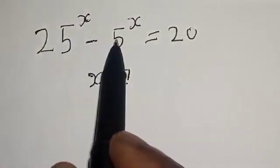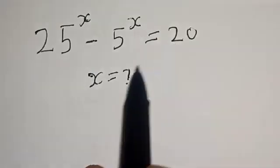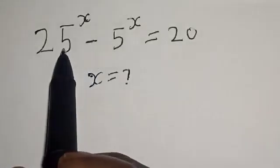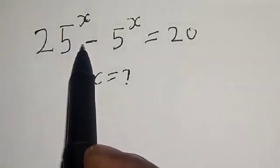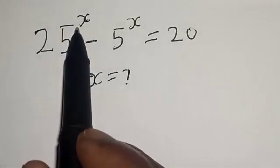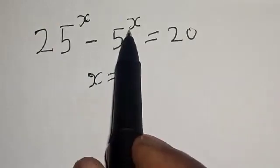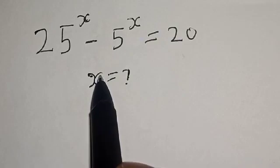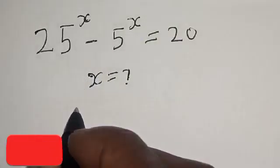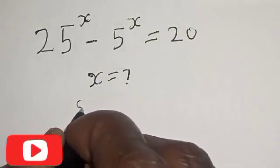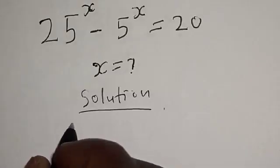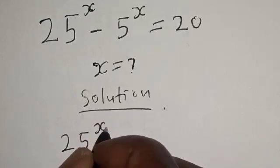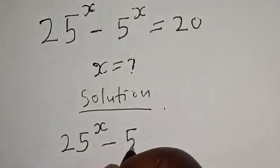25 raised to power x minus 5 raised to power x is equal to 20. What is the value of x? Welcome to my class. In this class, we want to find the value of x from this equation. The original equation gives us 25 raised to power x minus 5 raised to power x is equal to 20.